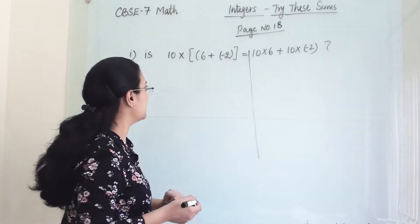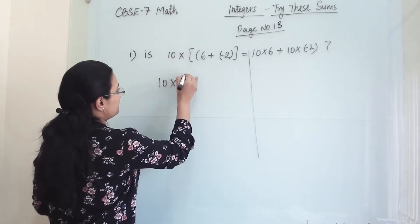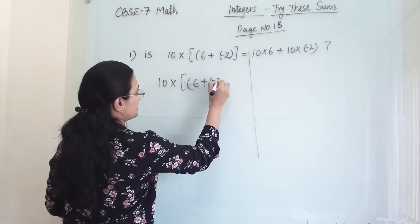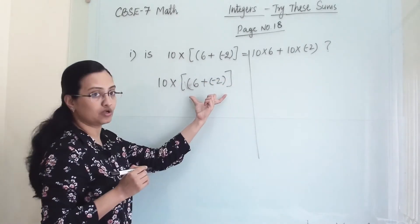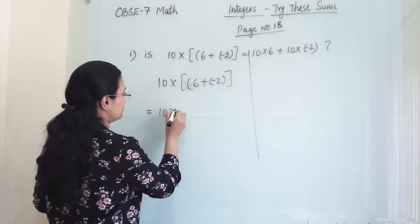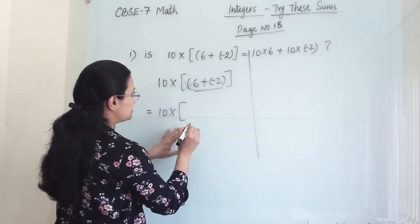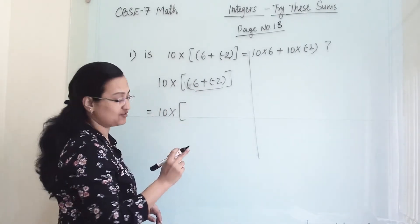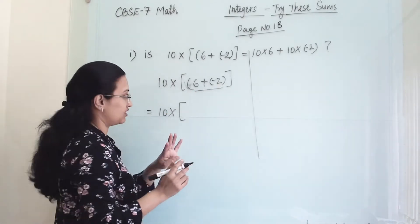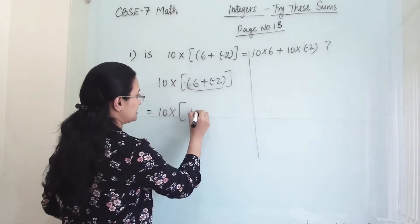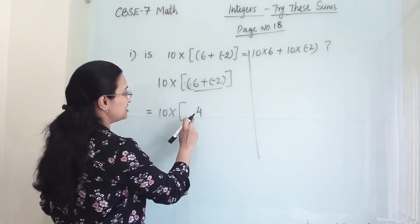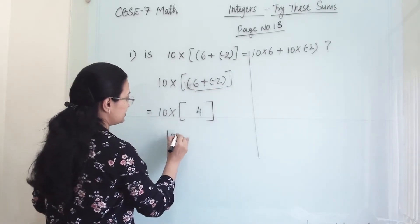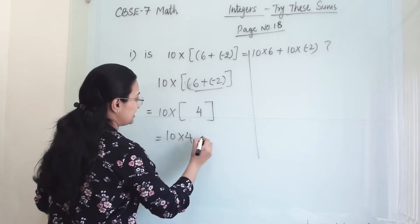We will solve 10 into bracket 6 plus minus 2 first. We will solve this bracket first. So 10 into — we keep bracket 6 minus 2. Plus minus will become minus, so we do subtraction. 6 minus 2 gives us 4, and the answer carries the bigger number sign, so we get plus 4. From this bracket we got 4. Now 10 into 4 gives us 40.